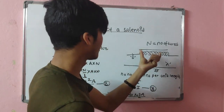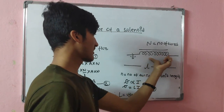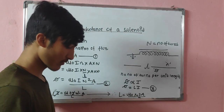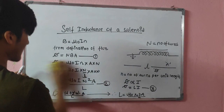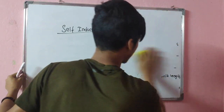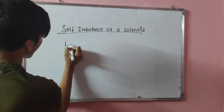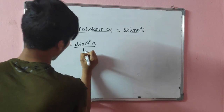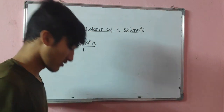Therefore, the self-inductance of a solenoid can be written as L = μ₀N²A / l, where l is the length of the solenoid, A is the cross-sectional area, and N is the total number of turns. This is the required expression for the self-inductance of a solenoid.